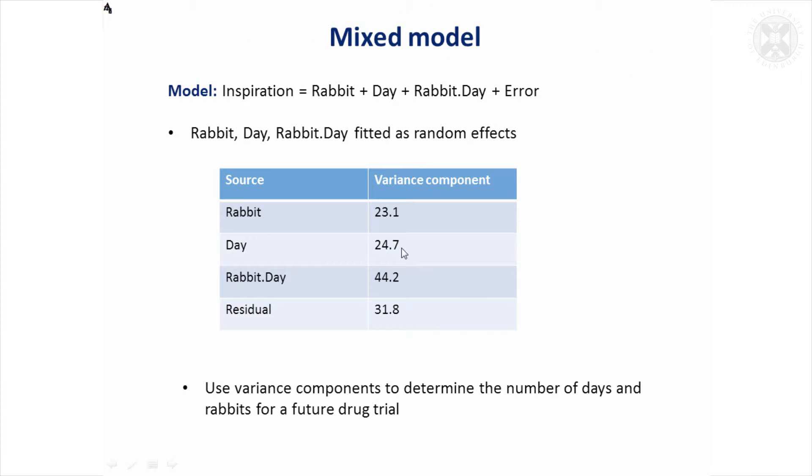A mixed model can come in there. We're not actually doing any formal comparisons, but it can help us see how much variability there is from each of these sources. To do that, we can fit a model and it fits all these effects as random. We don't have any fixed effects needed in this model. So we can fit rabbit, day, and the rabbit by day interaction as random effects. That results in all these amounts of variation. This term variance component is used when you fit random effects. You describe the variance as a variance component.